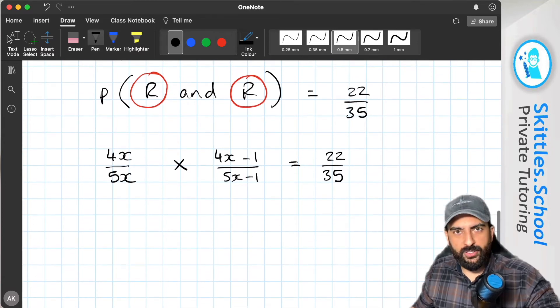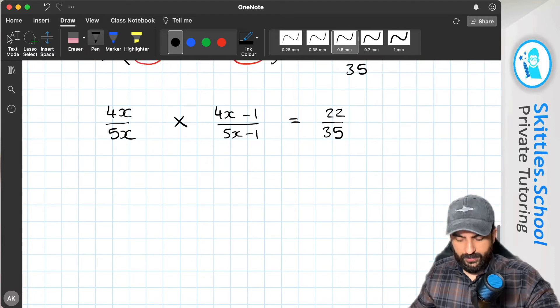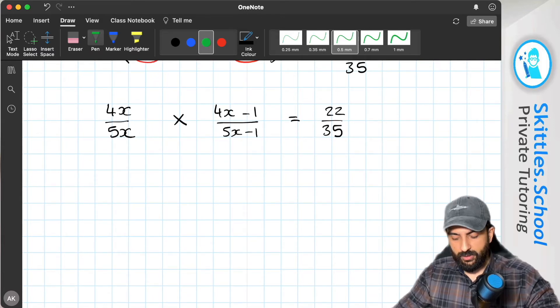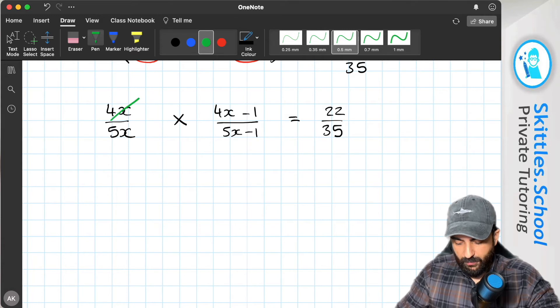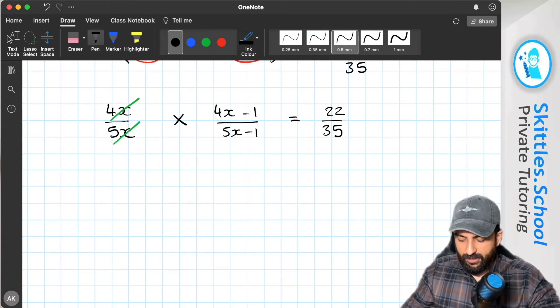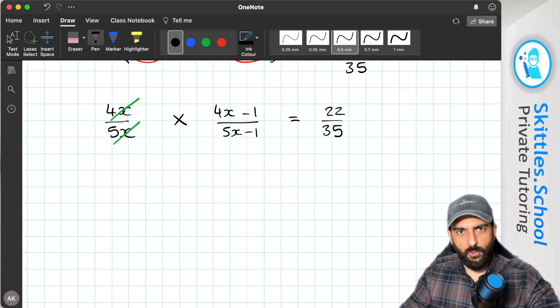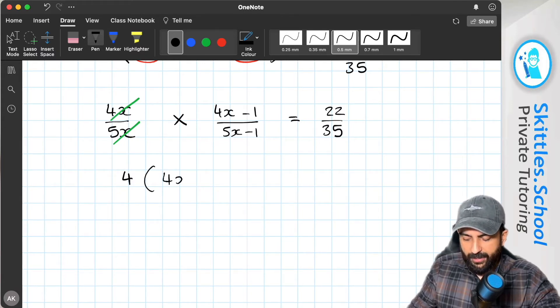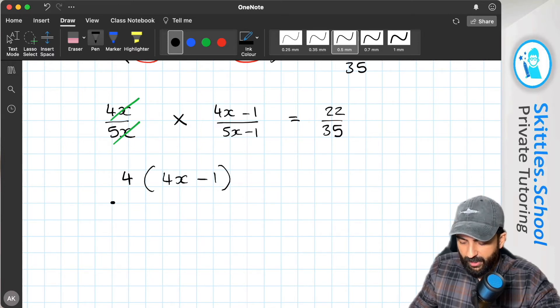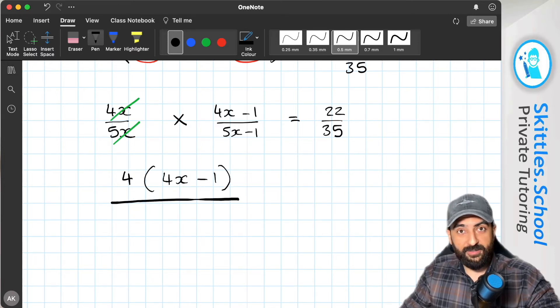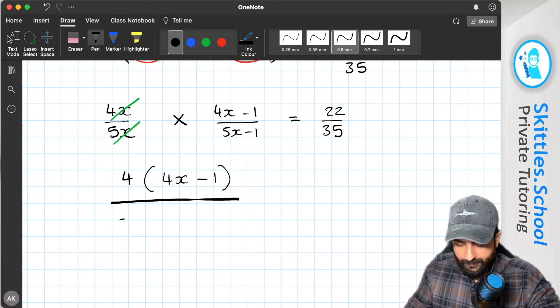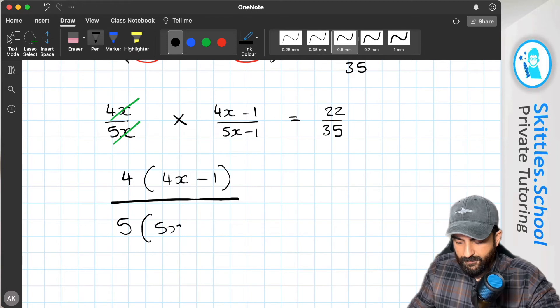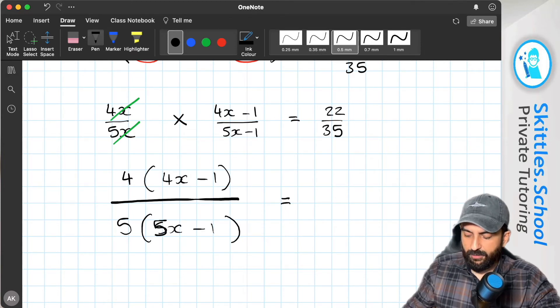Now we can use algebra to solve for x. So first of all, I'm going to simplify the x's on this one. Because x and x both divide. Now we're left with 4 times 4x minus 1. So at the top 4 times 4x minus 1. Underneath that, I'm left with 5 times 5x minus 1. And that still is equal to 22 over 35.